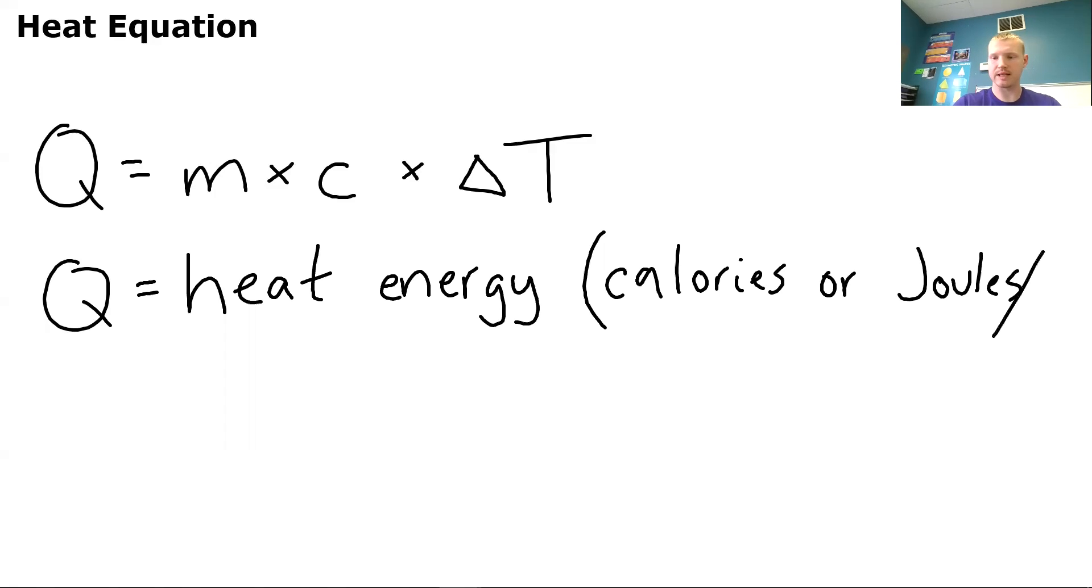And so you might be wondering, if I wanted to convert joules to kilojoules, how would I do that? Well, for every one kilojoule, that equals 1,000 joules. Just like for every one kilogram, it equals 1,000 grams. So that kilo just tacks on three zeros to the end of your one. So that's what Q stands for. It stands for heat energy.